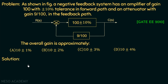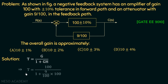The overall transfer function T equals G over (1 + GH), where G is the forward path gain equal to 100 and H is the feedback path gain equal to 9/100. Substituting these values: T = 100 / (1 + (9/100 × 100)). The 100s cancel, giving us the overall transfer function T equal to 10.